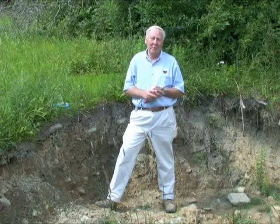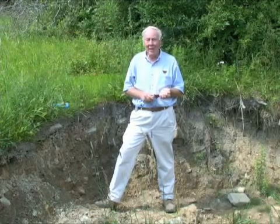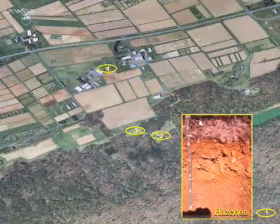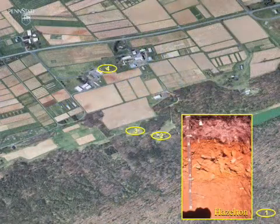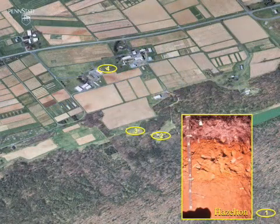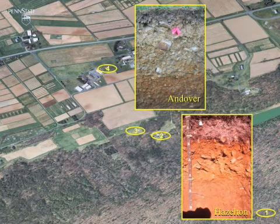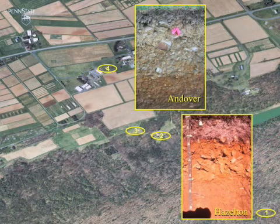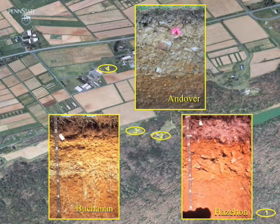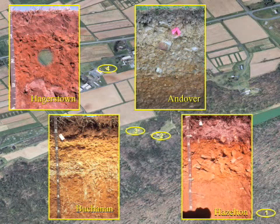We've now looked at four different pedons: the Hazelton on top of the mountain, the Andover soil here that's fairly wet, the Buchanan soil a little downslope, and the fourth soil is the Hagerstown, which we find in the valley floor.